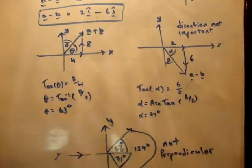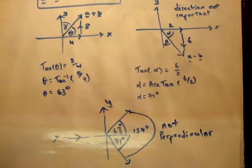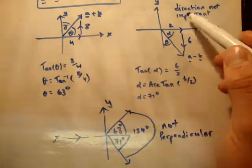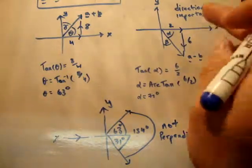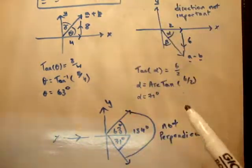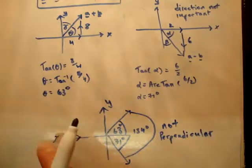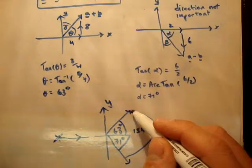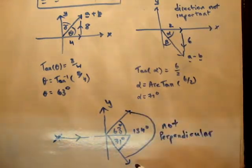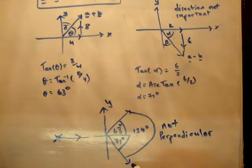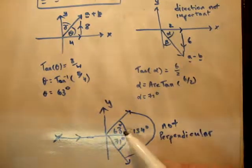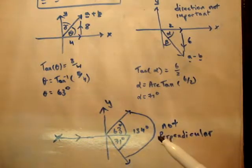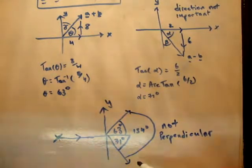So finally, what do we do? We sketch our two vectors. We draw our Cartesian plane as normal. This vector here is a plus b, this vector here is a minus b. If we add 63 and 71, we get 134 degrees. That's not 90, so therefore they're not perpendicular.